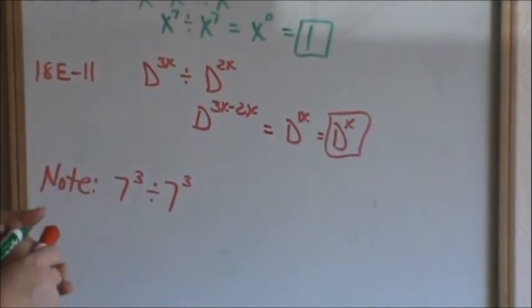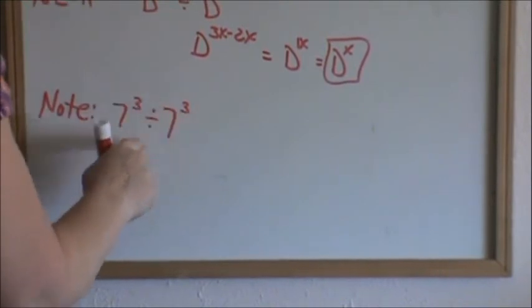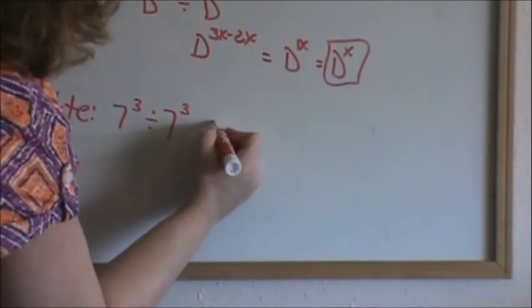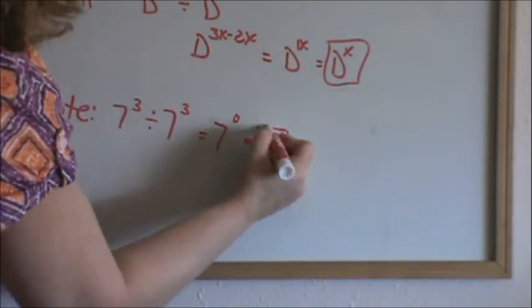As the bottom note, we just said this, but just as a reminder, the bases are the same when you're dividing. Subtract your exponents. 3 minus 3 is 0. 7 to the 0. Anything to the 0 power equals 1.